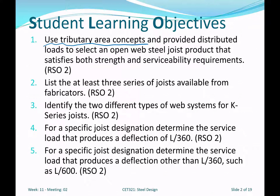I'd like you to understand the two different web systems within a joist, because you'll see them in the field and should be knowledgeable of the terminology and how they're different. We'll also look at different designations and how to identify the load that will produce L/360 deflection — there's a red number underneath the black number, which represents total load, but the red number is the distributed load that will produce L/360 deflection.